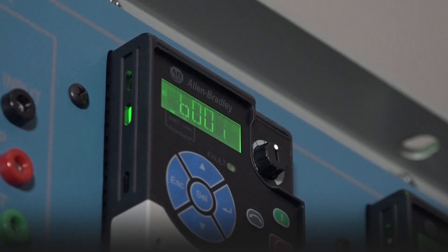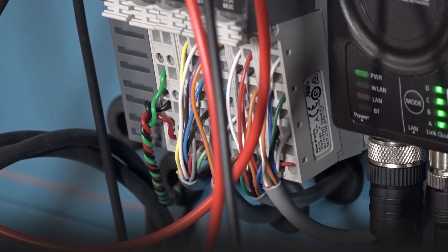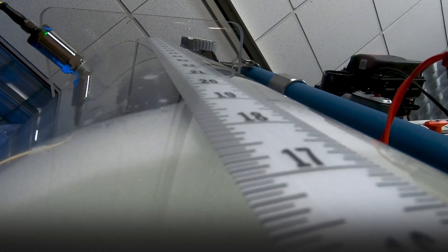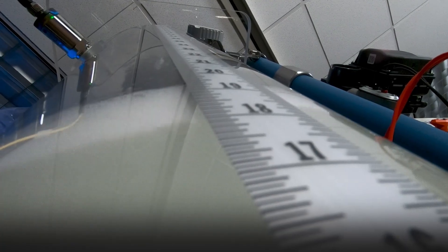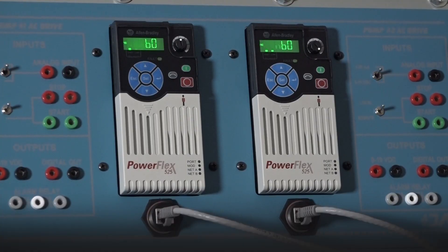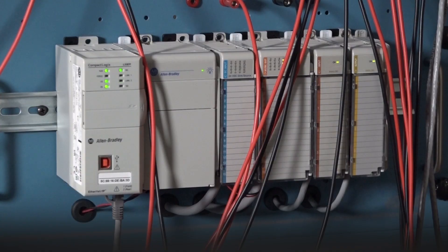So this uses a software called Plant PAX by Rockwell Automation and that's our distributed control software that powers all the controls of the system. Each pump is controlled by a variable frequency drive, a Rockwell PowerFlex 525. We also have a process rated PLC which is a compact logics Allen Bradley PLC that's modular based so we can add different applications to it as we grow.